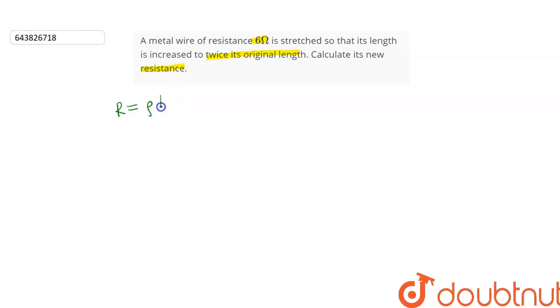So we know that R = ρL/A, where R is the resistance of wire, ρ is the resistivity, L is length, and A is the area of cross-section.